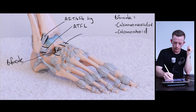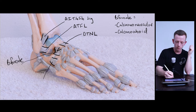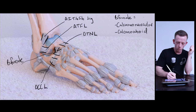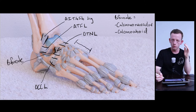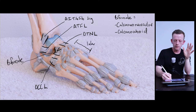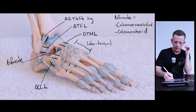We can also see the dorsal talonavicular ligament, and there's one more that joins the calcaneus to the cuboid — this is the dorsal calcaneocuboid ligament. Distal to those ligaments, there are lots of tiny ones, which I'll summarize as intertarsal ligaments — basically joining all the middle tarsal bones together in the midfoot.